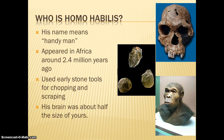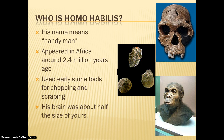Homo habilis. His name means handyman. He was handy because he was the first hominid that used tools. He used stone tools like these choppers — stone choppers that he used to create different tools and maybe chop meat and separate meat from bone. He appeared in Africa around 2.4 million years ago. He was able to do a little bit more, and he was able to use these tools as a handyman because his brain was a little bit bigger than Australopithecus's brain.